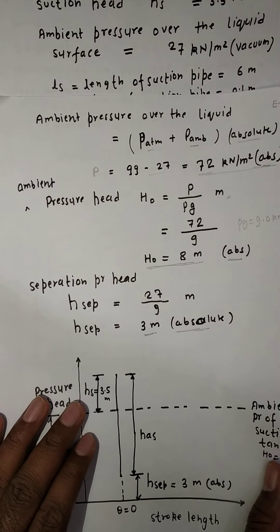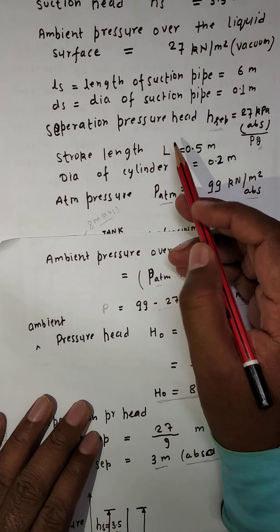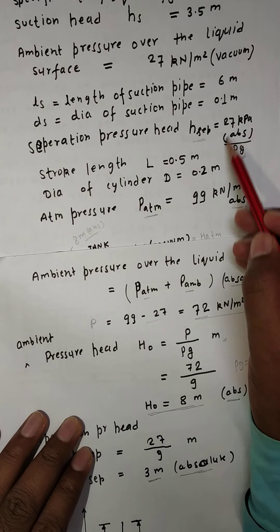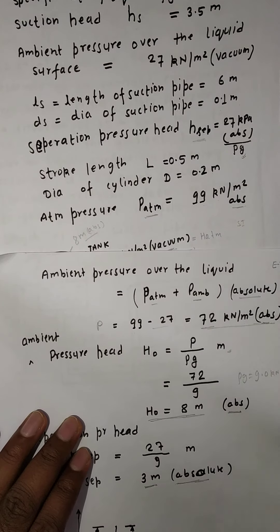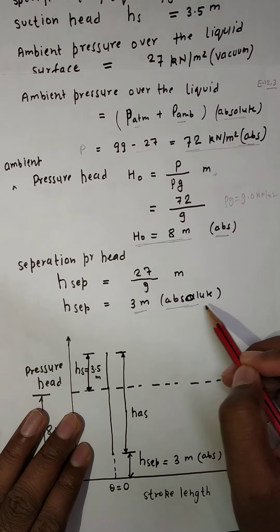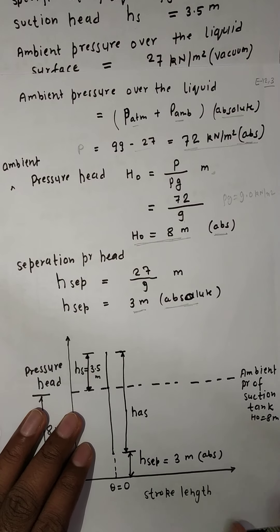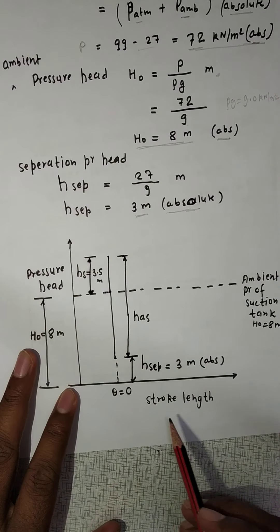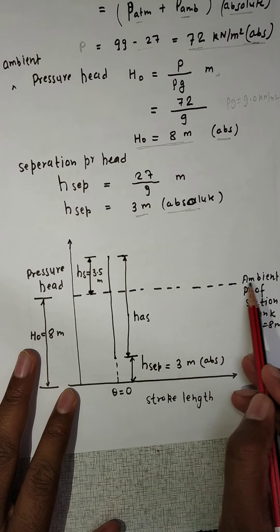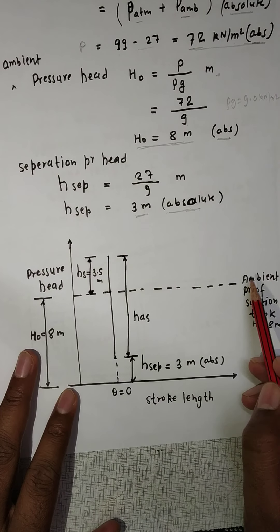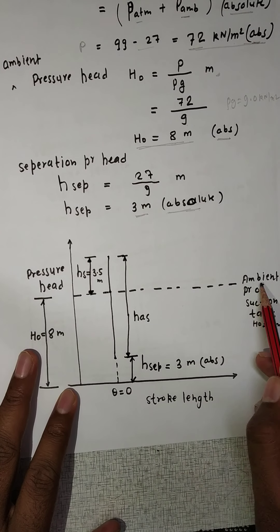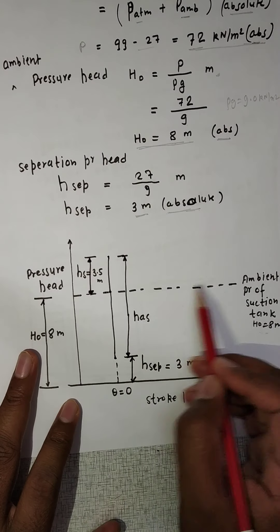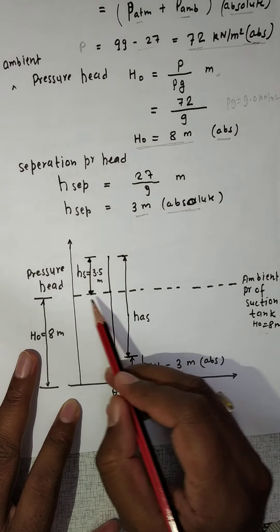The separation pressure head has been given as 27 kPa absolute. Dividing by rho g: 27 divided by 9 = 3 meters absolute. Now, this is the indicator diagram, drawn between pressure head and stroke length. The atmospheric pressure line and the ambient pressure of the suction tank is 8 meters — this value gives the pressure above the liquid surface.